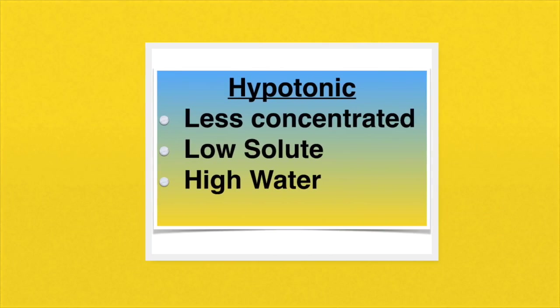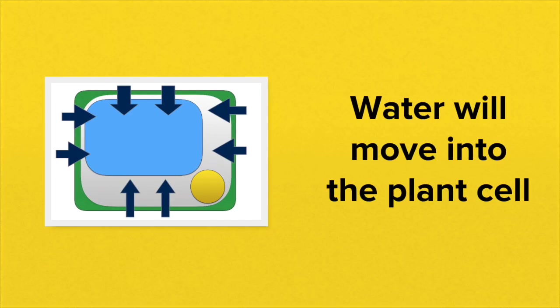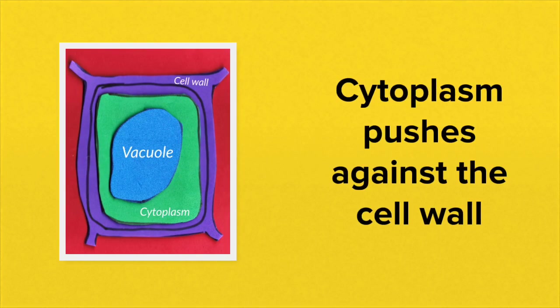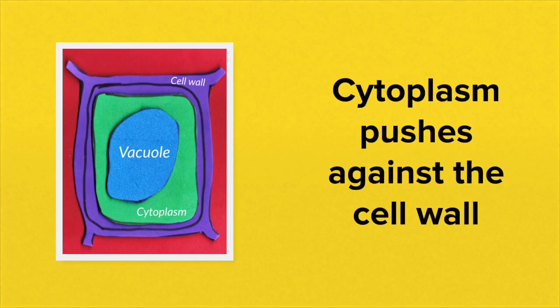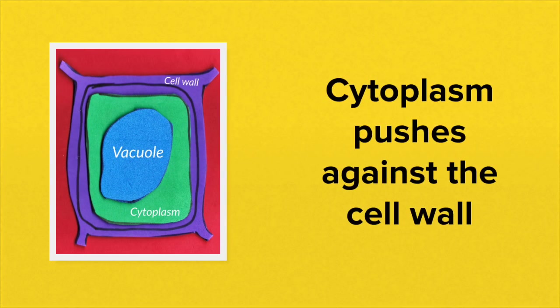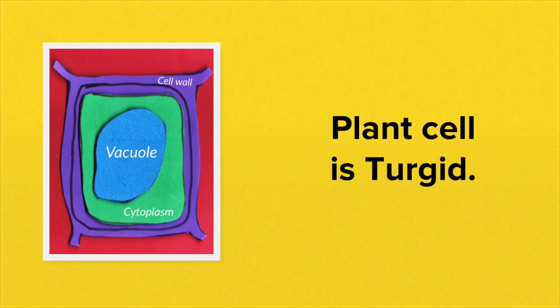This can be reversed by bathing the plant cells in a hypotonic solution, where water will move by means of osmosis back into the plant cell. The cytoplasm and the vacuole will both increase their water content, and this will cause the cell contents to push back against the cell wall. The plant cell is now once again turgid.